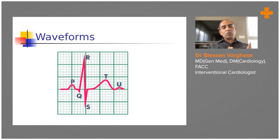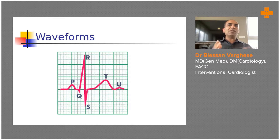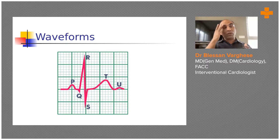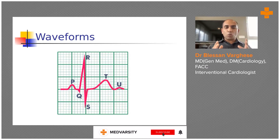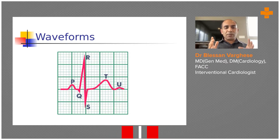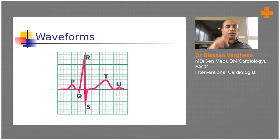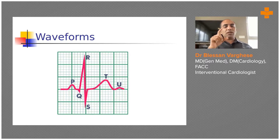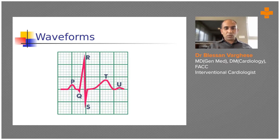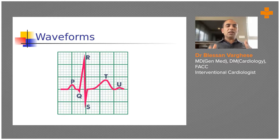On the x-axis, each small square is 0.04 seconds — always remember in seconds, as that is the metric universally used. Since there are five small squares in a big box, one big box equals 0.2 seconds. For voltage, one millivolt is represented by two big boxes, which means 10 small boxes upward equals one millivolt. So: two big boxes upward is one millivolt, one big box is 0.2 seconds, and one small box is 0.04 seconds.